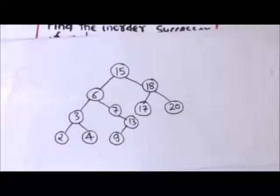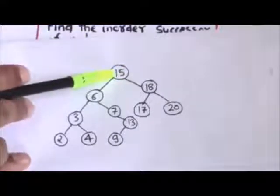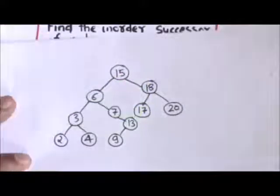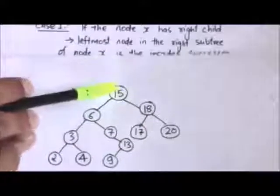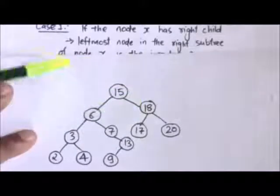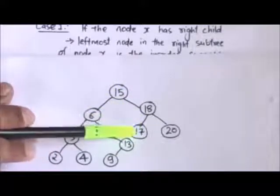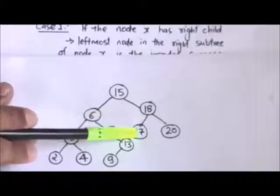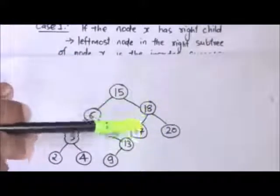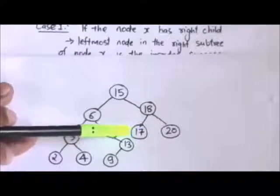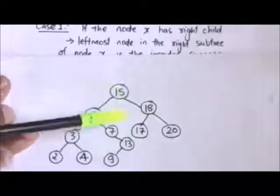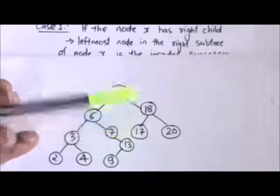In this binary search tree, the successor of the node with value 15 is the node with value 17, because this node has a right child, and the node with value 17 is the leftmost node in the right subtree of this node. So node with value 17 is the in-order successor of the node with value 15.